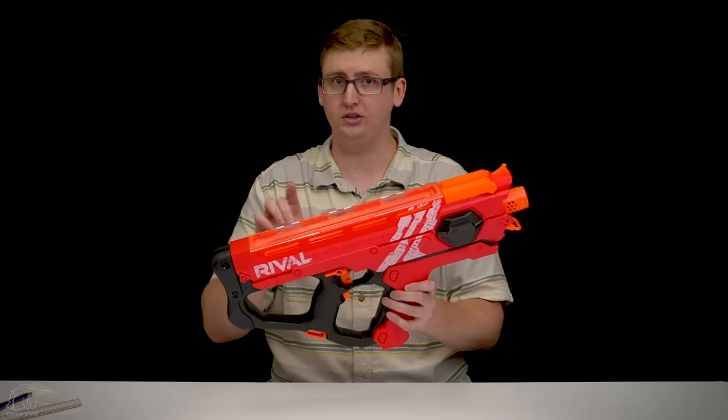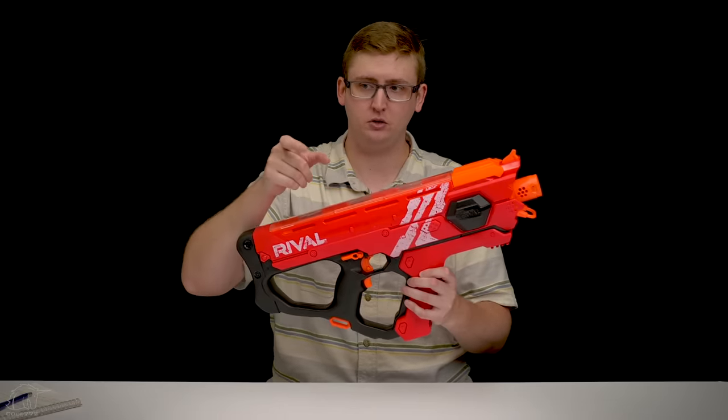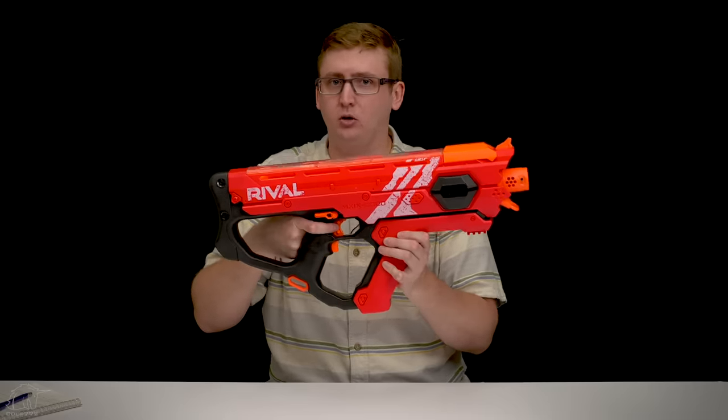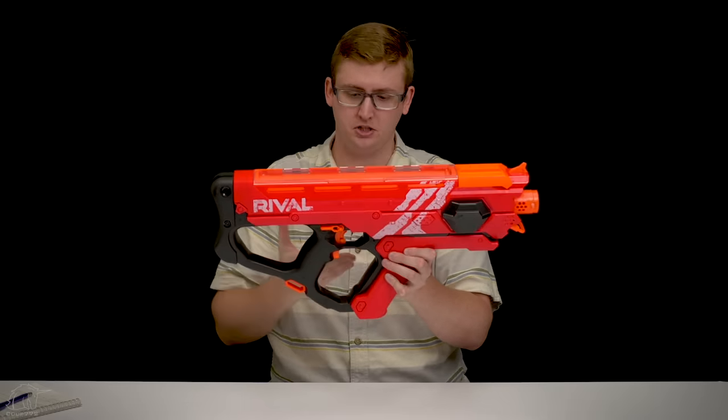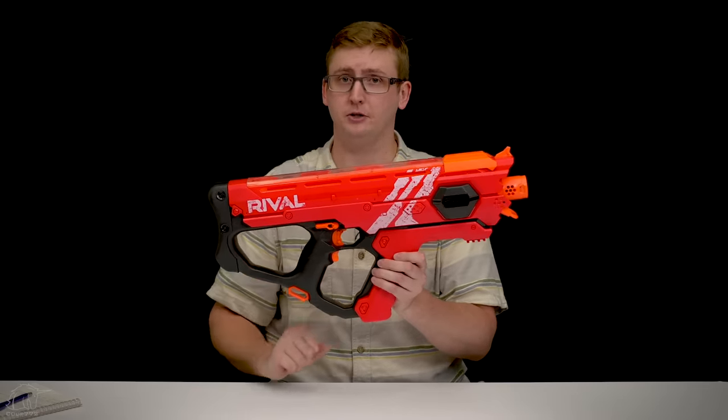But there's no selector switch, it's full auto only. So to burst fire or to shoot in semi, you can just learn trigger control. So at this point, that's kind of a normal rival trigger, along with the rev trigger, which is just an ordinary rival rev trigger. Being a flywheel power blaster, of course, you have to rev for a moment before pulling that primary trigger.